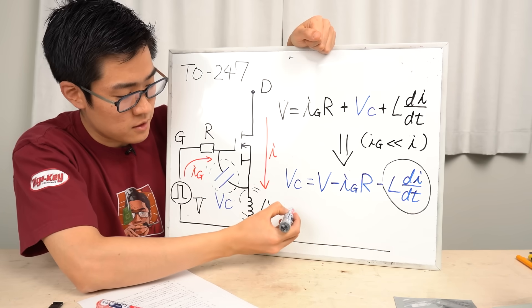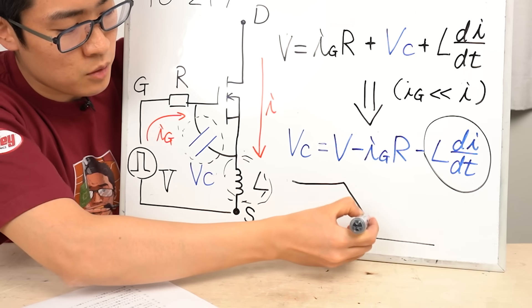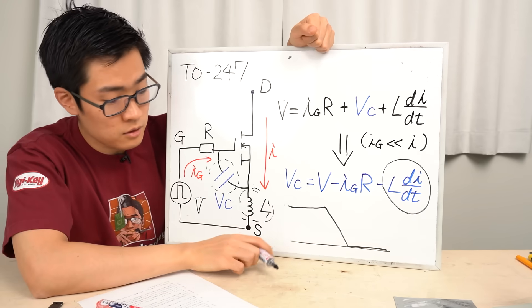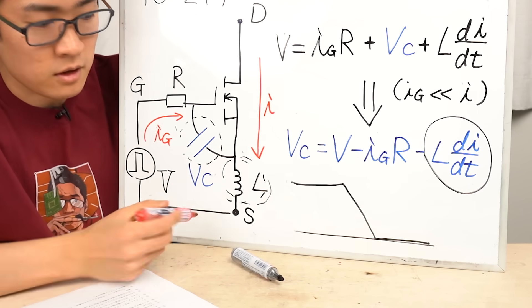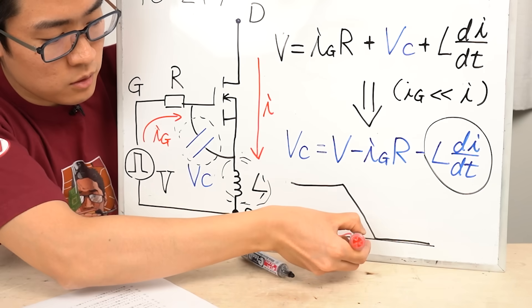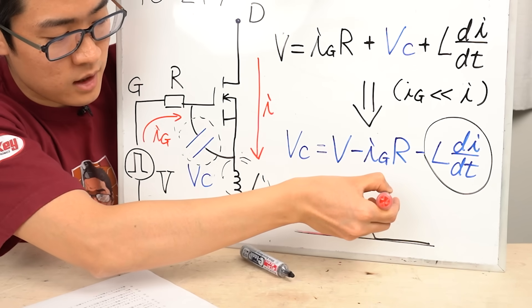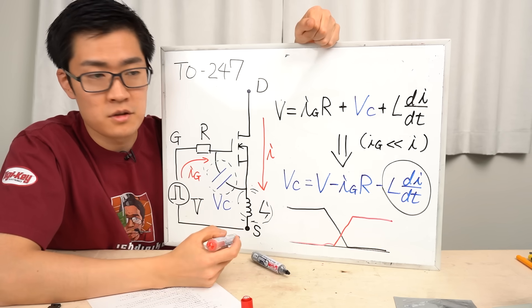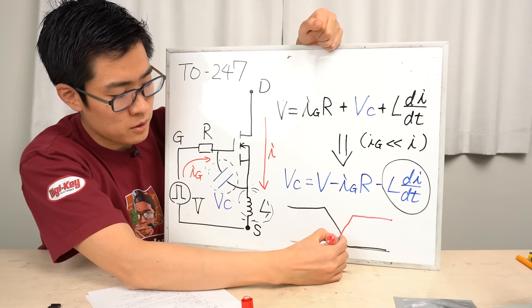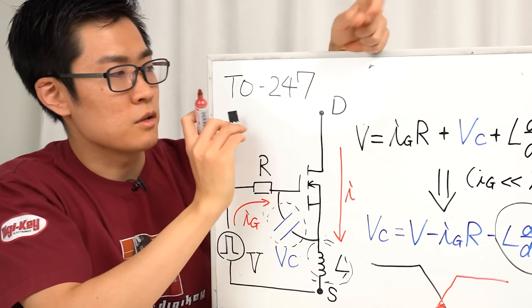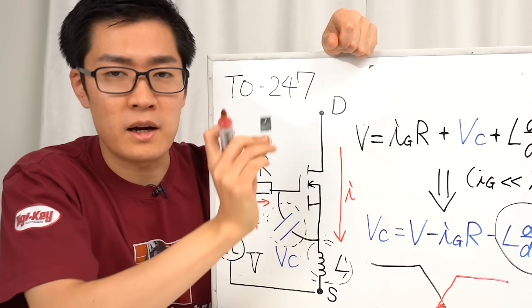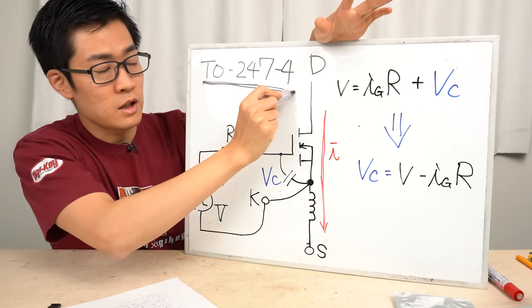For example, when turning on a semiconductor, the voltage across the power semiconductor drops like this. An ideal semiconductor would have this sharp voltage drop. On the other hand, as for the current, it doesn't flow at first. Then, around this point, it begins to increase gradually. The switching loss of a power semiconductor increases as the overlap period becomes longer. In other words, this TO247 package causes slower switching because of its parasitic inductance.